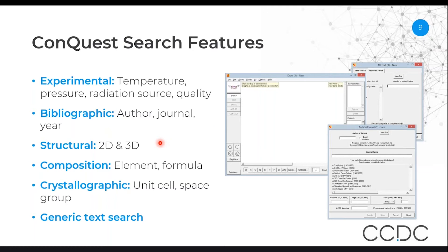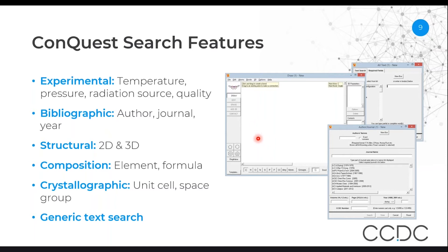It allows for structural searching, which includes a two-dimensional diagram search. This can be for a full structure or for a fragment. You can also include three-dimensional terms, so if you're looking for non-bonding interactions with specific parameters, you're able to define those quite easily with this interface.